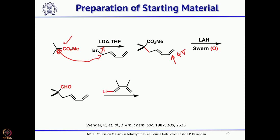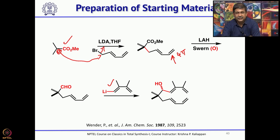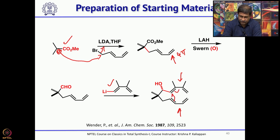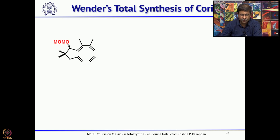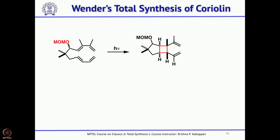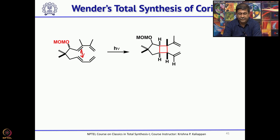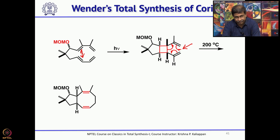You now have a tetraene — a diene here and a diene here. This tetraene can undergo an intramolecular 4+4 cycloaddition reaction. Before doing so, you protect the hydroxyl group as the MOM ether, then carry out the photochemical reaction. One can view this as a 4+4 cycloaddition, or alternatively as an intramolecular 2+2 followed by a Cope rearrangement, giving the cyclooctadiene product.